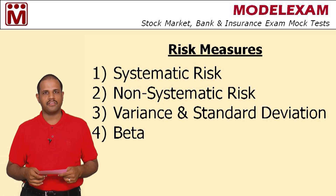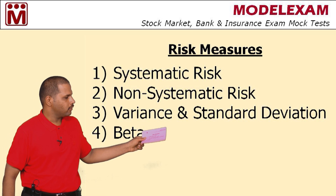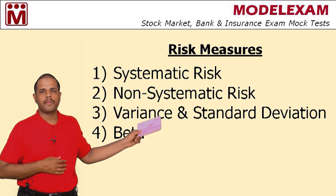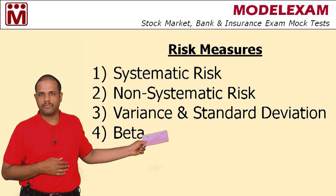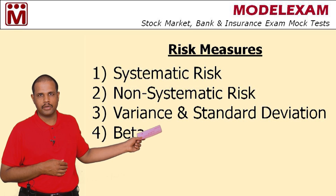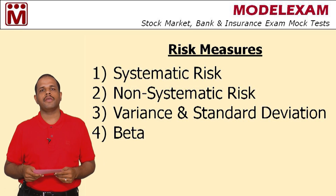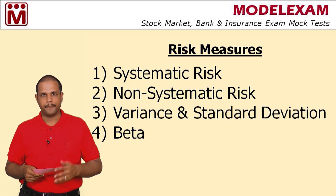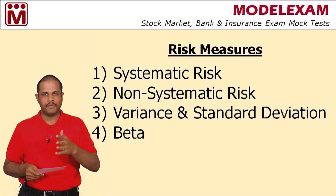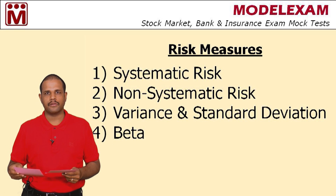These are the topics: systematic risk, non-systematic risk, variance, standard deviation, and beta. These are the topics we are going to see. So let us start with systematic risk.